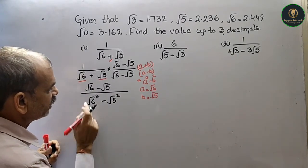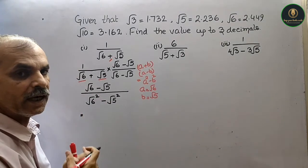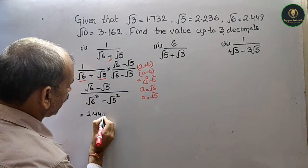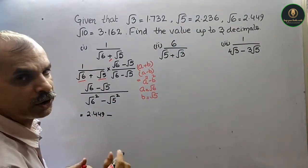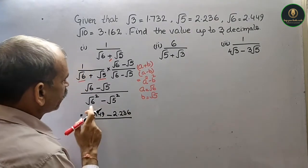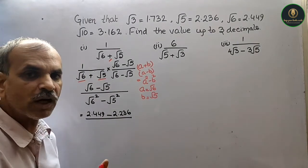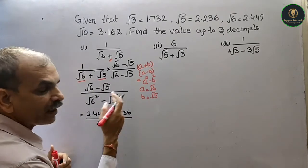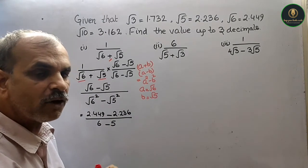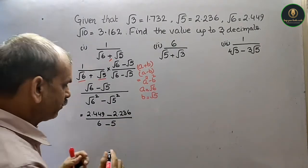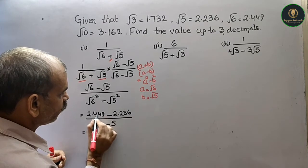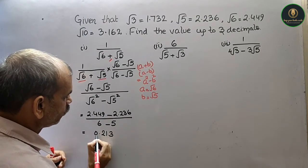That is equal to — अब उपरवानी value दो जो इसने दे रखा है. तो root 6 कितना है? 2.449. तो यहाँ पर 2.449 minus root 5 — root 5 is 2.236. By: root 6 square is 6, minus root 5 square is 5, तो 6 minus 5 is 1. तो नीचे वाला value 1 है — सिर्फ उपर वाले को solve करो. 9 में 6 किया 3, 4 में 3 किया 1, 4 में 2 किया 2, and 0 — so this is your answer: 0.213.